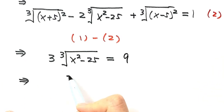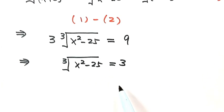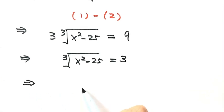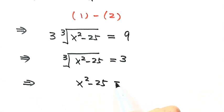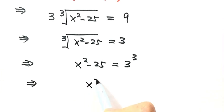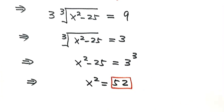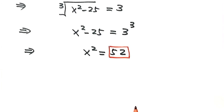Dividing both sides by 3 gives cube root of (x²-25) = 3. Raising both sides to the power of 3: x²-25 = 27, so x² = 52. The answer is 52. Thanks for watching.